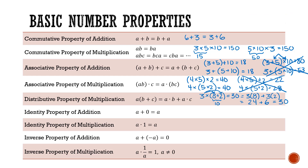Next we have the identity property of addition. This says that if I add 0 to any number a, I will still have a. For a numeric example, 3 plus 0 — I've added nothing, I'm still left with 3. Algebraically, x y squared plus 0 would still give me x y squared.